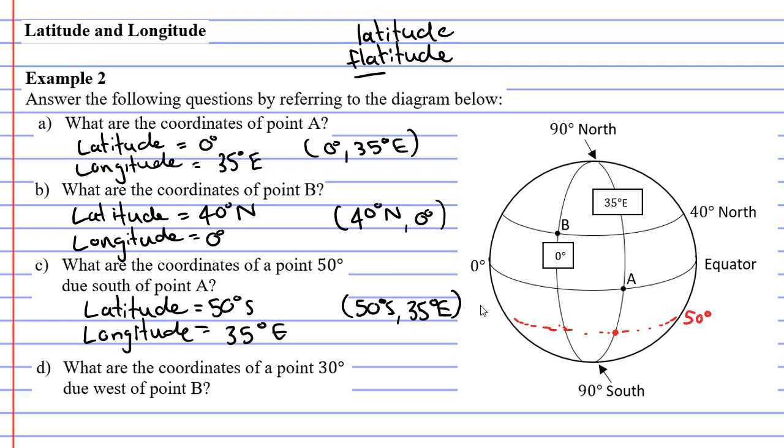Question D, last one. What are the coordinates of a point 30 degrees due west of point B? So if we go west, that means to the left, so maybe out here somewhere, and we're going to have a new meridian of longitude coming down like so.